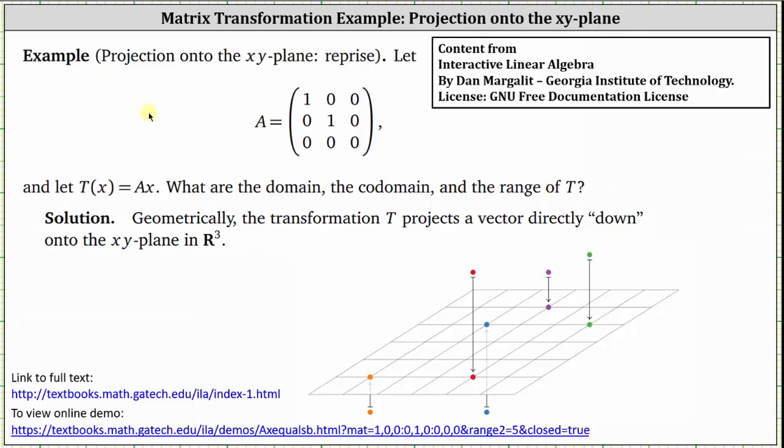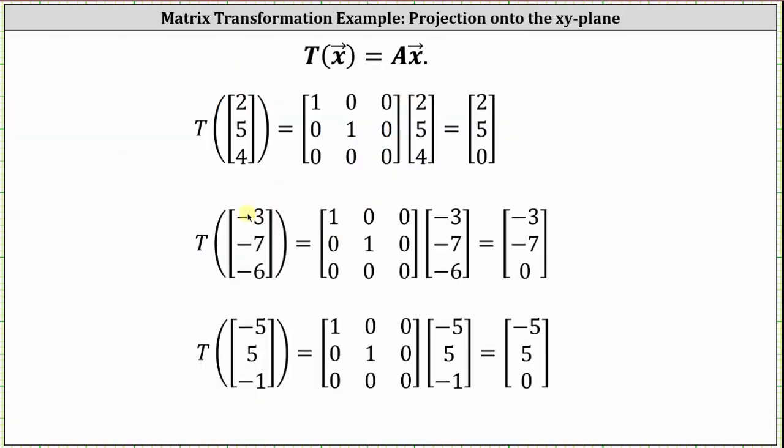Let's look at some examples of this matrix transformation. Starting with the vector in R3, if we multiply matrix A times the vector in R3, notice how the only result is that the third component or the z component is equal to zero. Both the x and y components remain the same, which is why this transformation is a projection onto the xy plane.